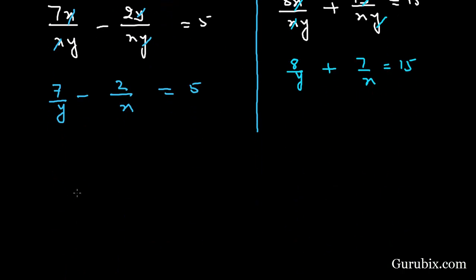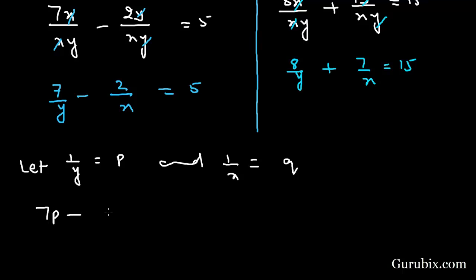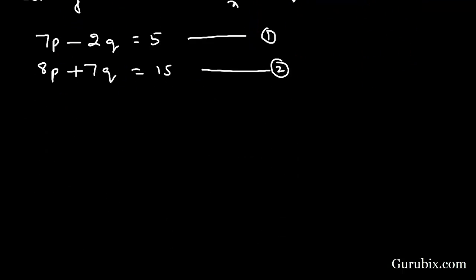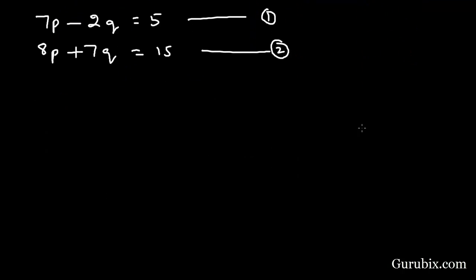Here we observe that we can let 1 over y equal p and 1 over x equal q. Then these two equations become: 7p minus 2q equals 5 — this is equation number 1 — and 8p plus 7q equals 15 — this is equation number 2. Now we shall solve these two equations using the substitution method for p and q.